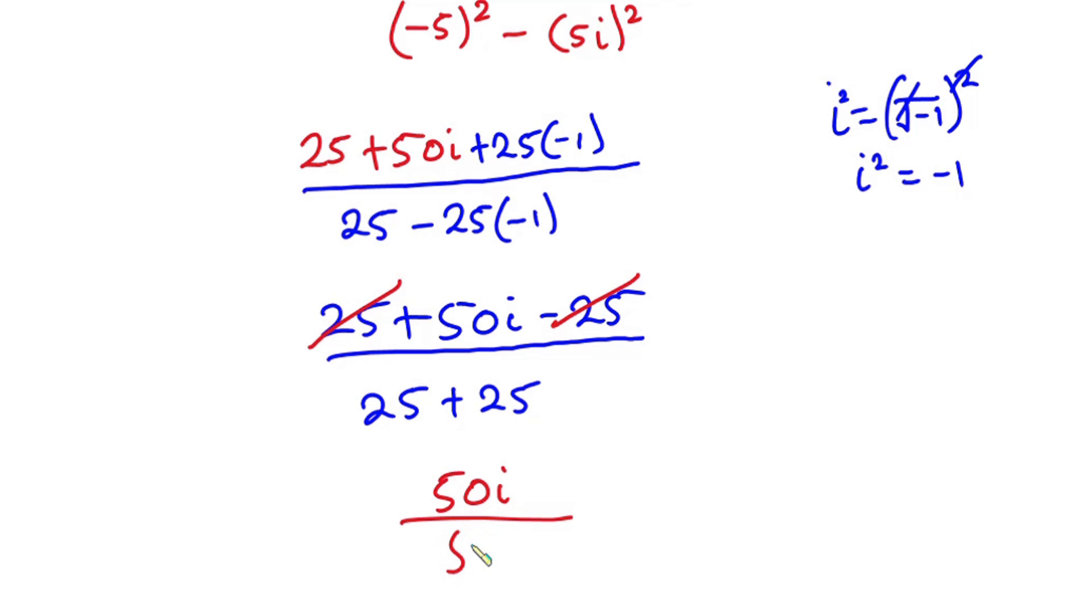So we have 50i over 25 plus 25 is nothing but 50. So straight away, you can see that this 50 will take care of this 50. So we have i as our answer.